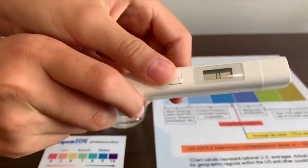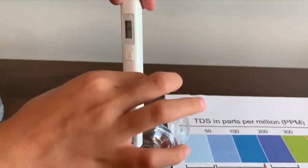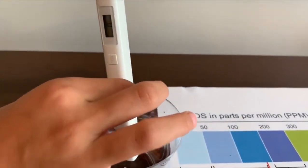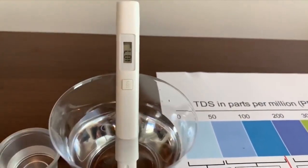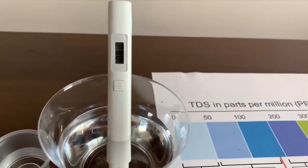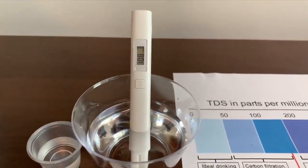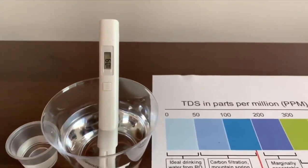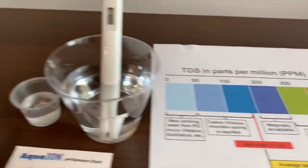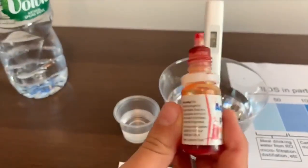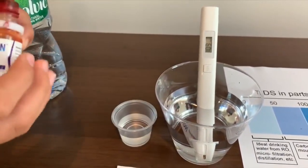Results: the student will present the findings of the study, which will include the results of the water quality parameters measured in the different water samples and the results of the multivariate statistical analysis. The results will be presented in a clear and concise manner, supported by appropriate visual aids such as graphs, charts, and tables.